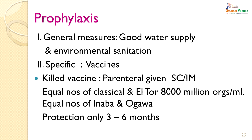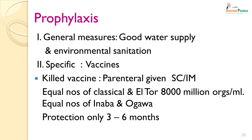Prophylaxis can also be given by specific vaccines. The killed vaccine was originally used — given subcutaneously or intramuscularly — with equal numbers of classical and El Tor Vibrios (8,000 million organisms per ml), and equal numbers of Inaba and Ogawa. Protection from this vaccine lasts for only 3 to 6 months. The oral vaccines now being introduced are of two types: one is a killed oral whole-cell vaccine with or without the B subunit of the cholera toxin, and a live oral vaccine with classical, El Tor and O139 strains with the toxin genes deleted, so that only the protective mechanism of the body is facilitated.